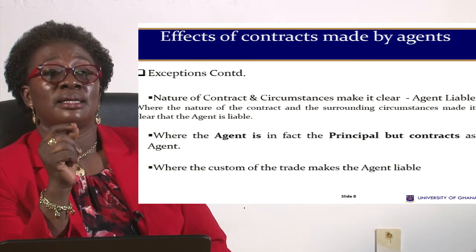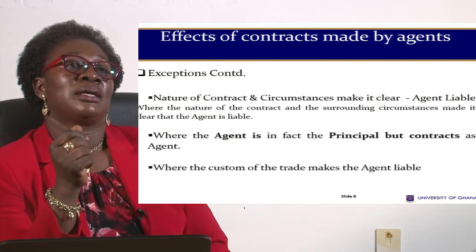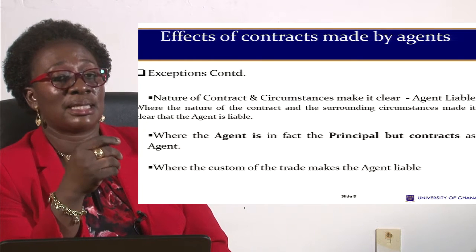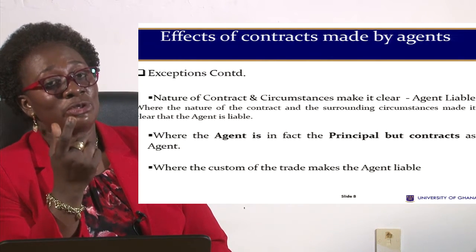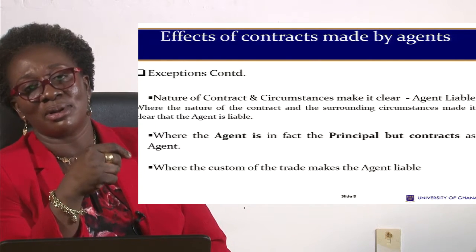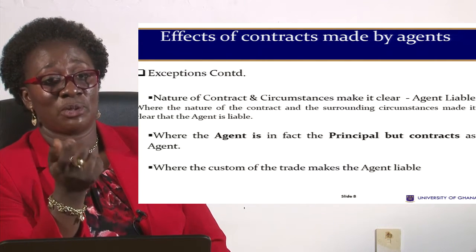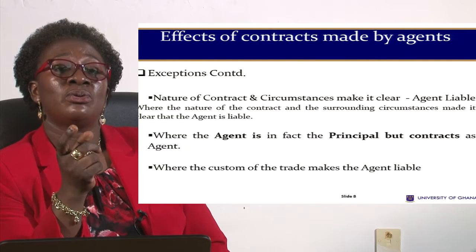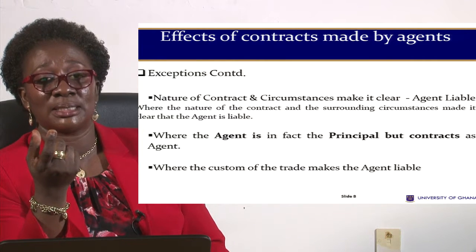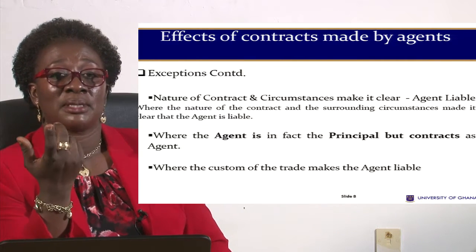There are also instances where a person could be an agent but may in fact be the principal himself. Take the example of a sole proprietorship — the owner and the business are one and the same person. The proprietor goes out to sign contracts in the name of the business, but in law he and the business are one and the same. So even though he may have disclosed he is acting for somebody else, being the sole proprietor, he can be held personally liable because the agent and the principal are the same person.